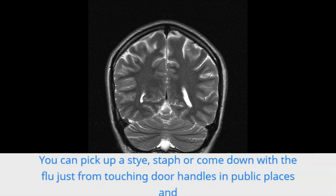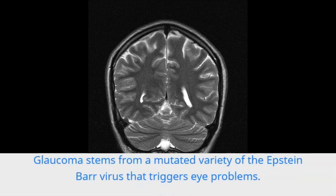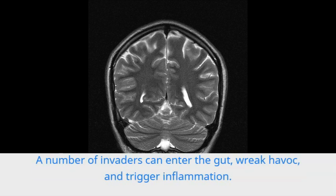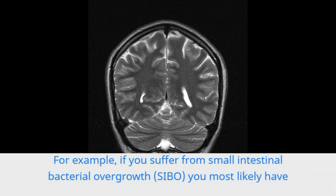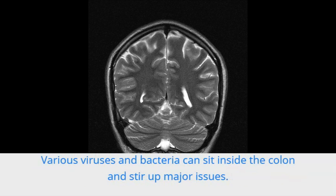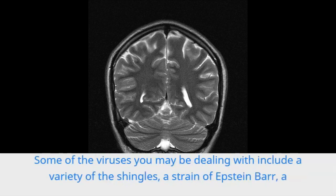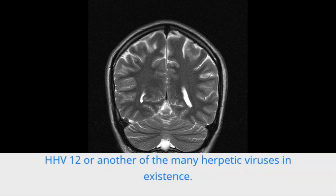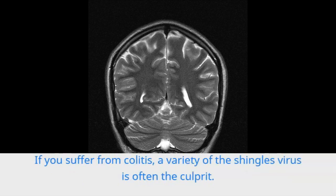Eye inflammation can arise from a number of different bacteria getting into the eye. You can pick up a stye, staph, or come down with the flu just from touching door handles in public places and rubbing your eyes. Glaucoma stems from a mutated variety of the Epstein-Barr virus that triggers eye problems. Other types of inflammation you may experience include skin inflammation, gut inflammation, or colon inflammation. A number of invaders can enter the gut, wreak havoc, and trigger inflammation — for example, if you suffer from small intestinal bacterial overgrowth (SIBO), you most likely have streptococcus in your system creating inflammation and other issues in the gut. Various viruses and bacteria can sit inside the colon and stir up major issues, including varieties of shingles, strains of Epstein-Barr, mutated HHV-6, cytomegalovirus, undiscovered HHV-10, HHV-11, HHV-12, or other herpetic viruses.